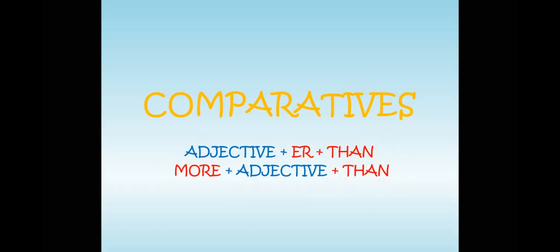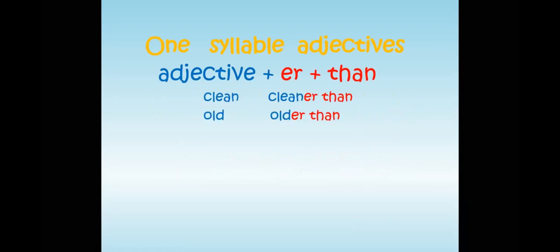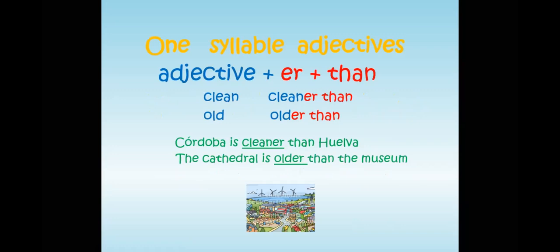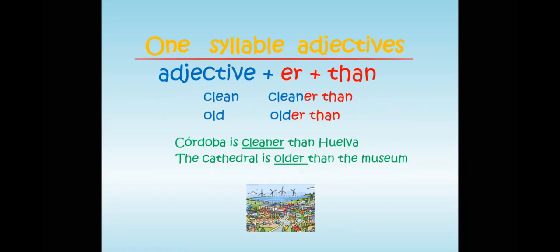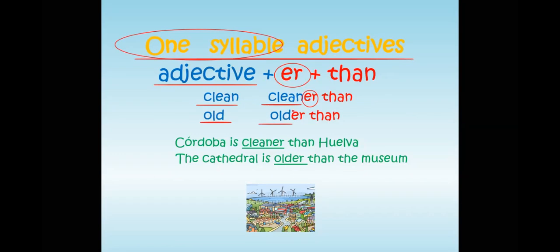Here we have some examples about the different comparatives. Pay attention. For one-syllable adjectives, in the majority of cases you add -ER to the adjective. For example: clean becomes cleaner, old becomes older. And always you use 'than'.